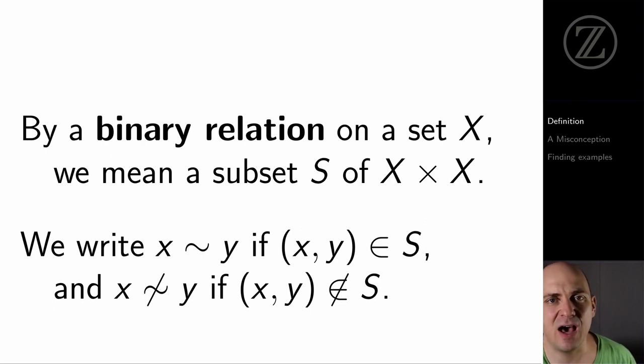We're going to say that a binary relation on a set X is a subset of X cross X, and it's the subset that represents the pairs x and y for which the relation holds, for which x tilde y. So we've got this subset, we'll call it S, of X cross X.